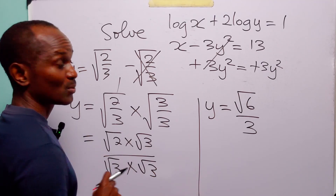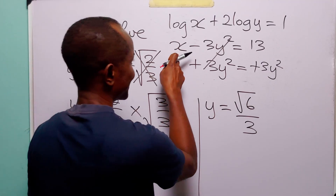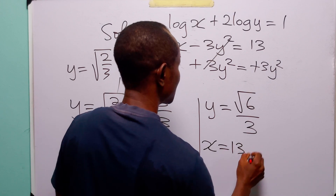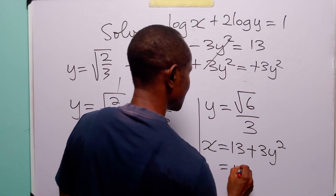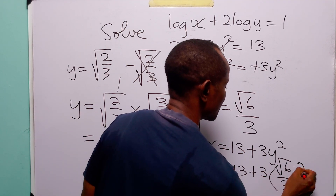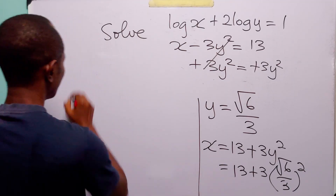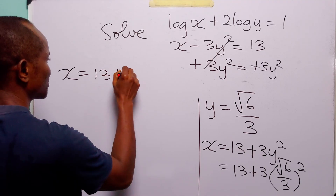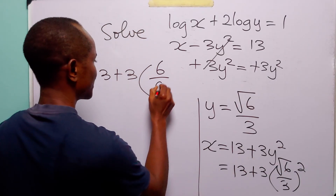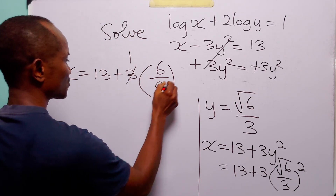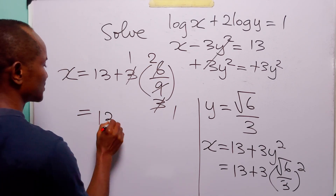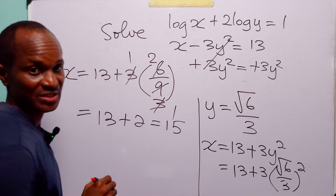From this value of y, we can find the value of x. Remember that x is equal to 13 plus 3y squared. So we have x is equal to 13 plus 3 times (root 6 over 3) squared. From here, x is equal to 13 plus 3 times (6 over 9). Since 3 cancels into 9 to give 3, and 3 cancels into 6 to give 2, we have x is equal to 13 plus 2 which is equal to 15.